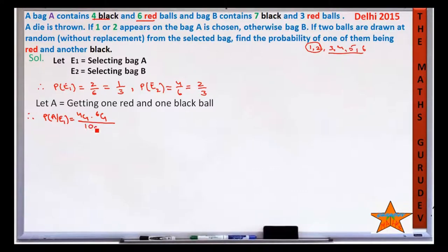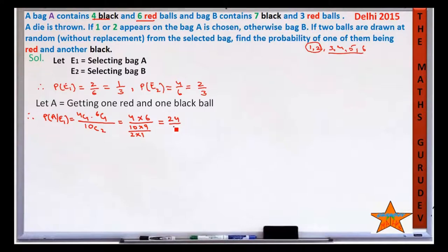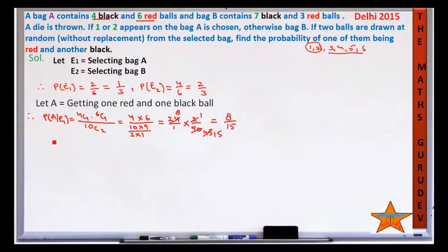For P(A|E1): from bag A, choose 1 black from 4 and 1 red from 6, divided by choosing 2 from 10. So it is 4C1 × 6C1 / 10C2 = (4 × 6) / (10×9/2) = 24/45. Simplifying: 24/45 = 8/15. So P(A|E1) = 8/15.